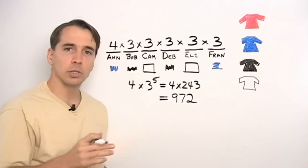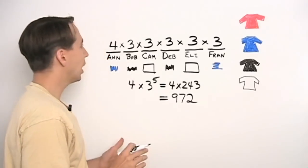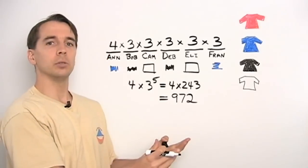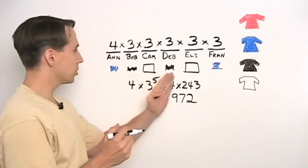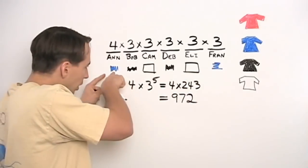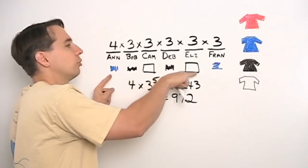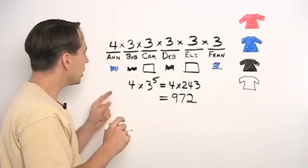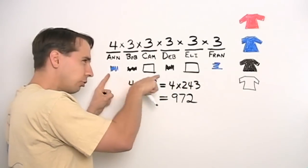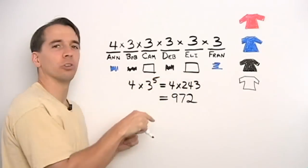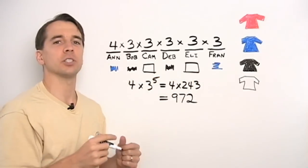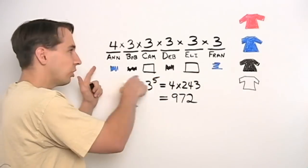And the strategy we took here is what I like to call constructive counting. What we did is we thought about how would the cool people choose their shirts if they wanted to stay cool. We're just trying to construct one sequence of choices. If we think about how the cool people would actually do it, how they would make their choices, sometimes that tells us how we can count them.